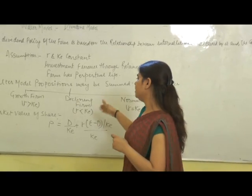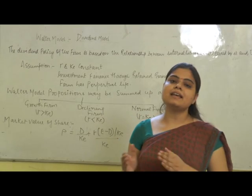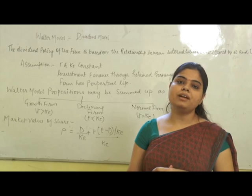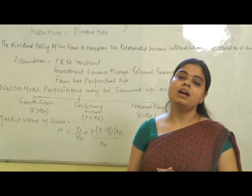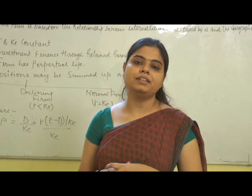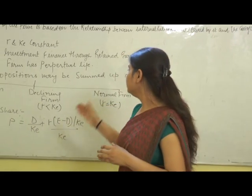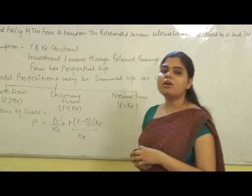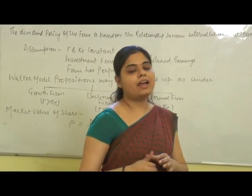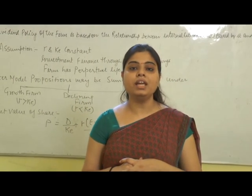The second is the Declining firm, where the rate of return R is less than the cost of capital KE. In that situation, the firm does not have the investment opportunity, so they distribute 100% profits to the investors so that they can invest in further areas and fulfill the wealth maximization objective. The third is the Normal firm, where R is equal to KE. In that case, the dividend policy does not affect the market value of the firm or the shares.